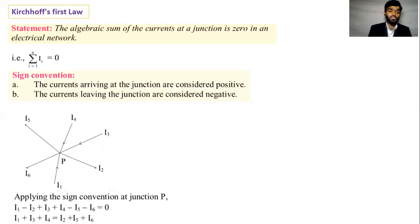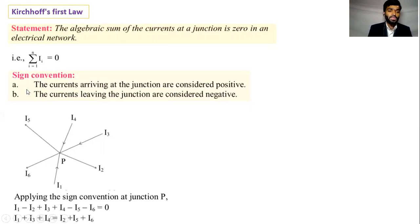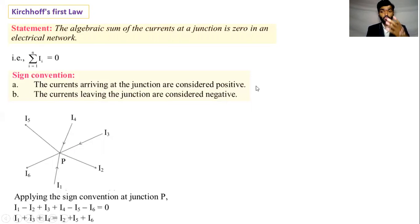The first law is Kirchhoff's Current Law. The sign convention states: the currents arriving at the junction are considered as positive.